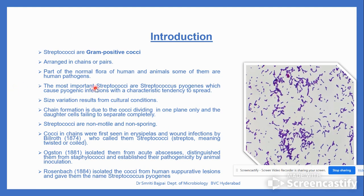The most important Streptococci are Streptococcus pyogenes. The name 'pyo' means pus-inducing, pus-producing. Pyogenic infections are the characteristic of Streptococcus pyogenes and they have the tendency to spread.